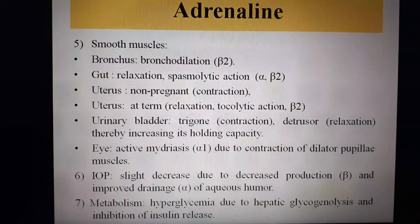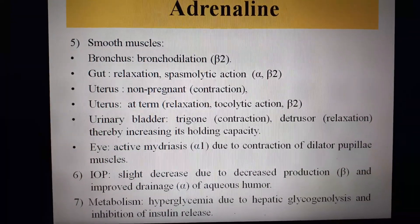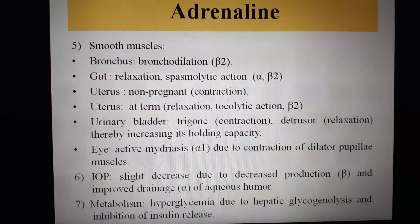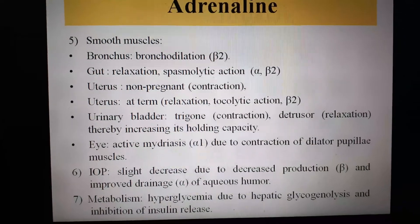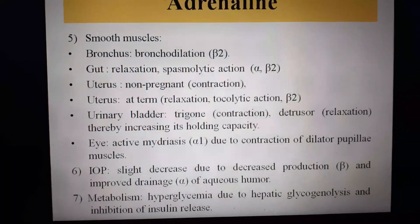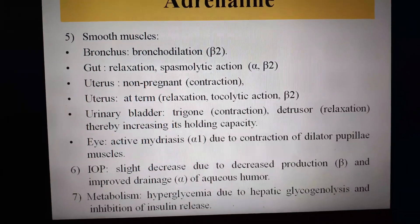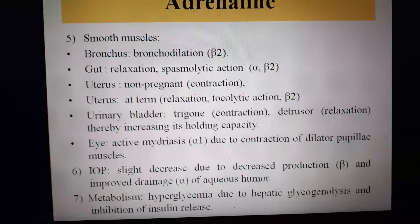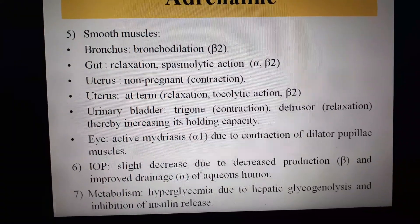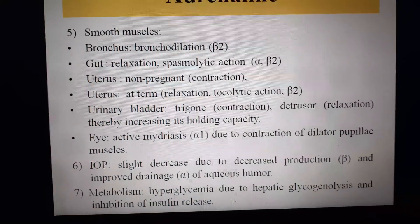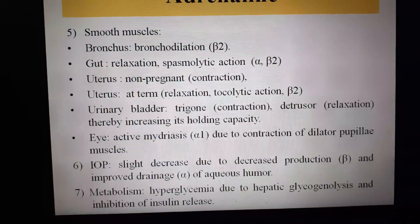In the uterus, the non-pregnant uterus contracts, while at term the pregnant uterus shows tocolytic or relaxant action due to beta-2 action. In the urinary bladder, the detrusor is relaxed while the trigone is contracted, thereby increasing the holding capacity. In the eye, there is active mydriasis via alpha-1 action due to contraction of the radial muscles of the iris (dilator pupillae muscles), and a slight decrease in intraocular pressure due to decreased production and improved drainage of aqueous humor.